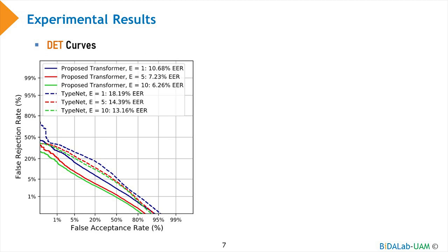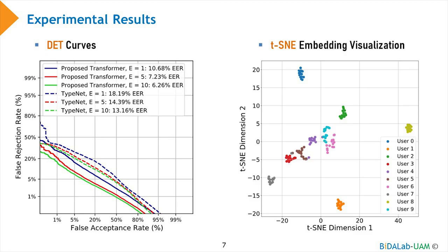This slide shows a graphical representation of system performance through DET curves, where our proposed approach is represented by the solid line and the reference study by the dashed line. Even with one enrollment session, our transformer outperforms the RNN with 10 enrollment sessions. On the right-hand side, we can see a representation of the embedding space considering 10 users through the popular T-SNE method, which stands for T-Distributed Stochastic Neighbor Embedding. This method is used to visually represent points of high-dimensional spaces. Apart from a few outliers, the embeddings of different users, represented by different colors, are quite well separated.